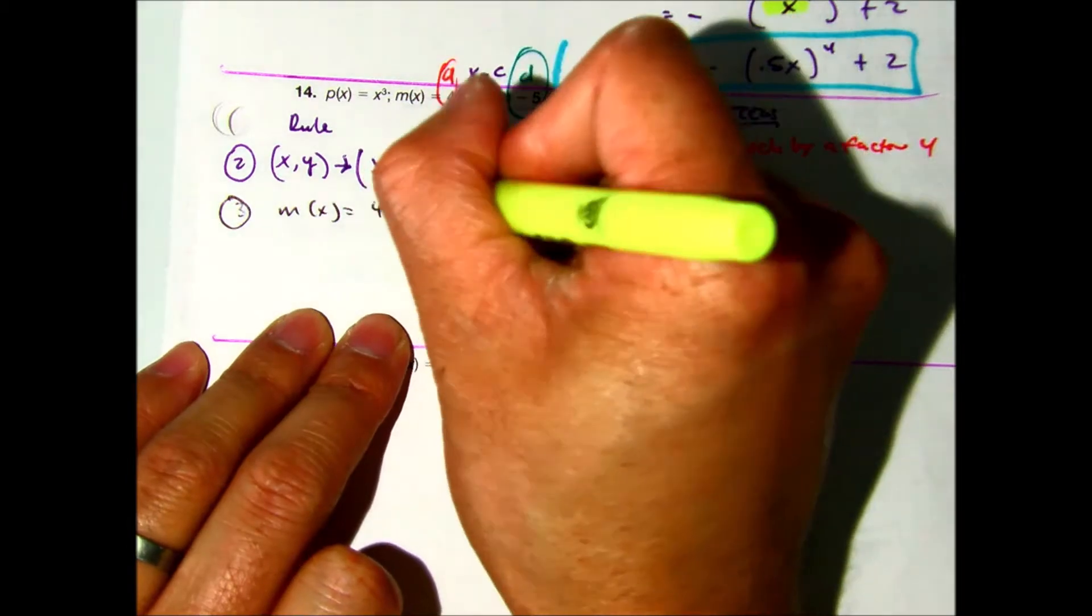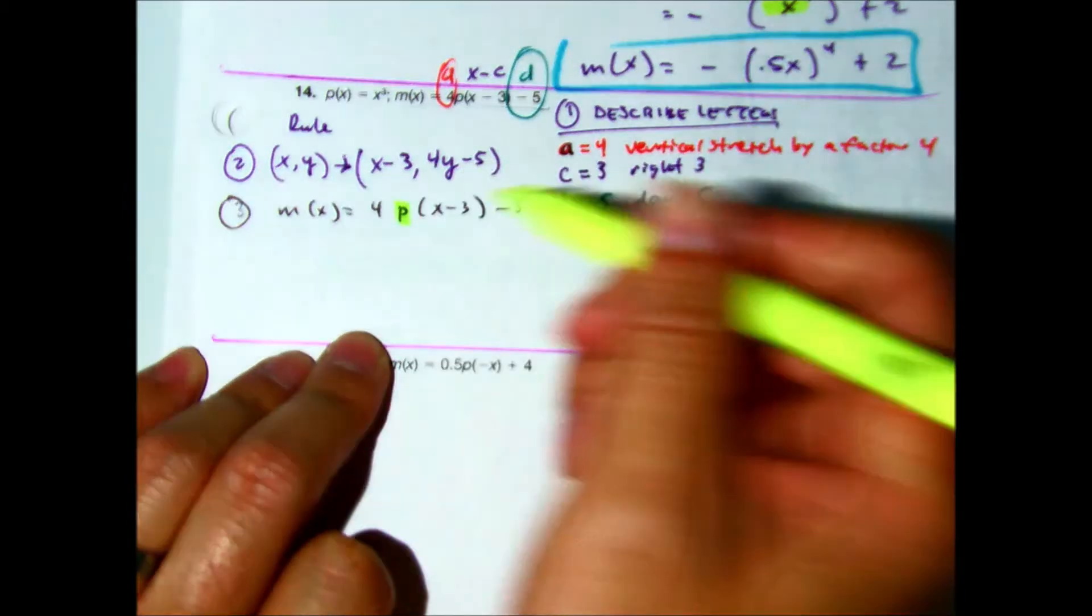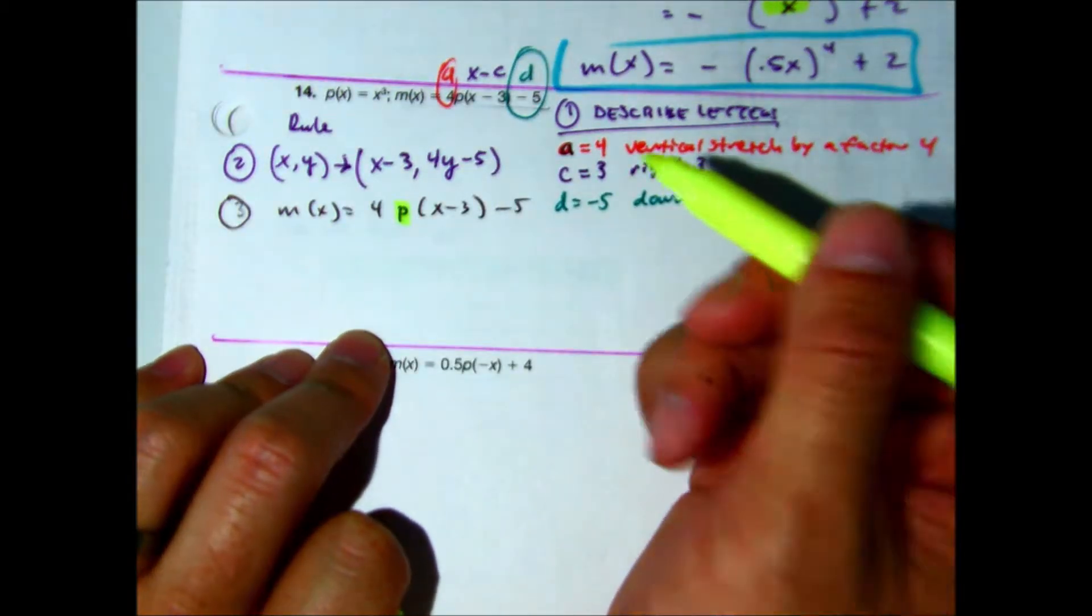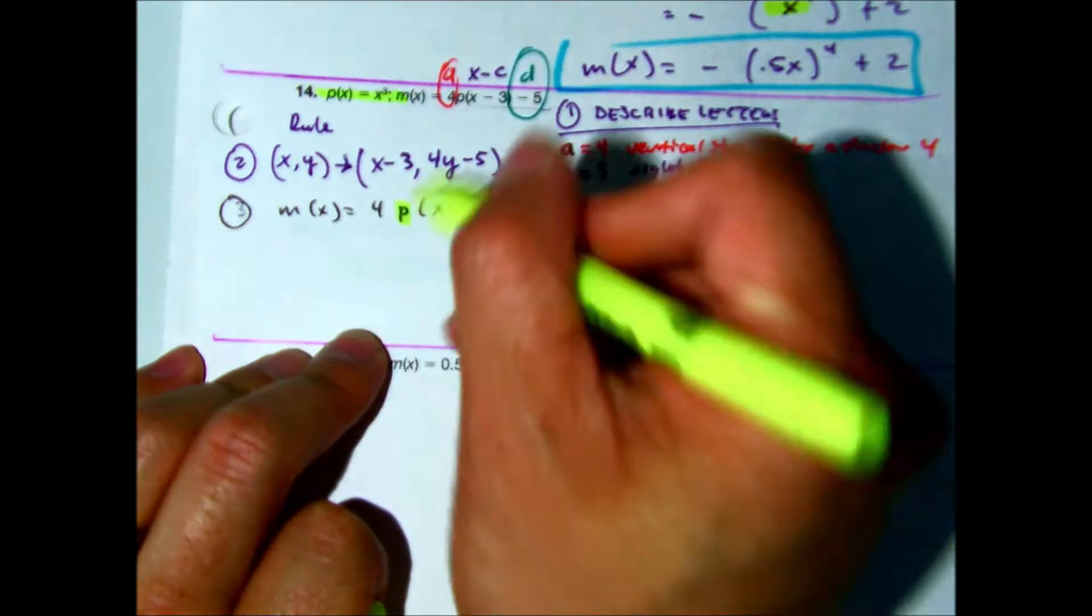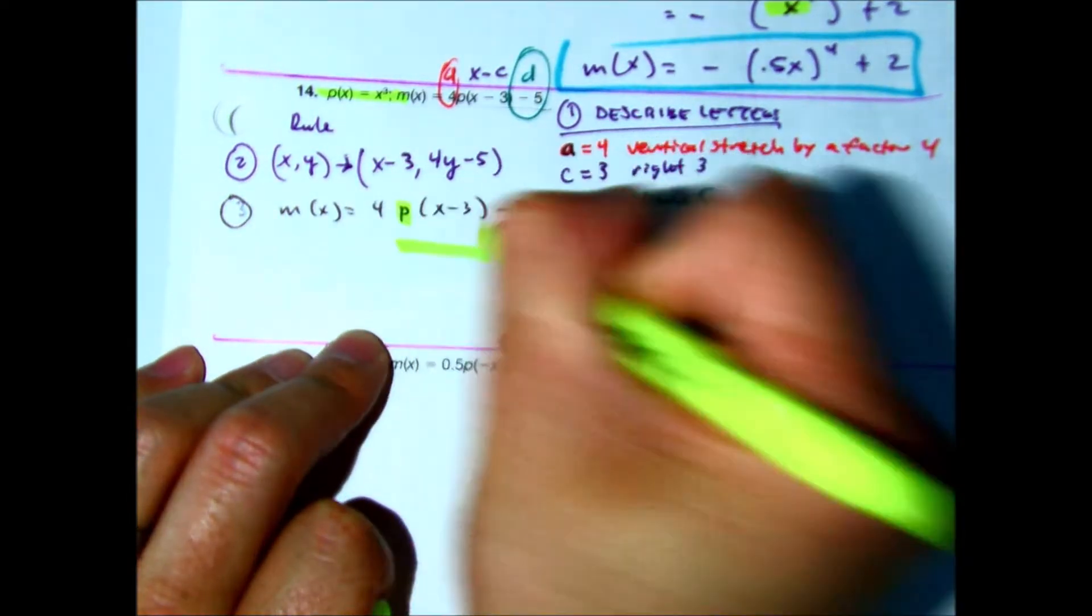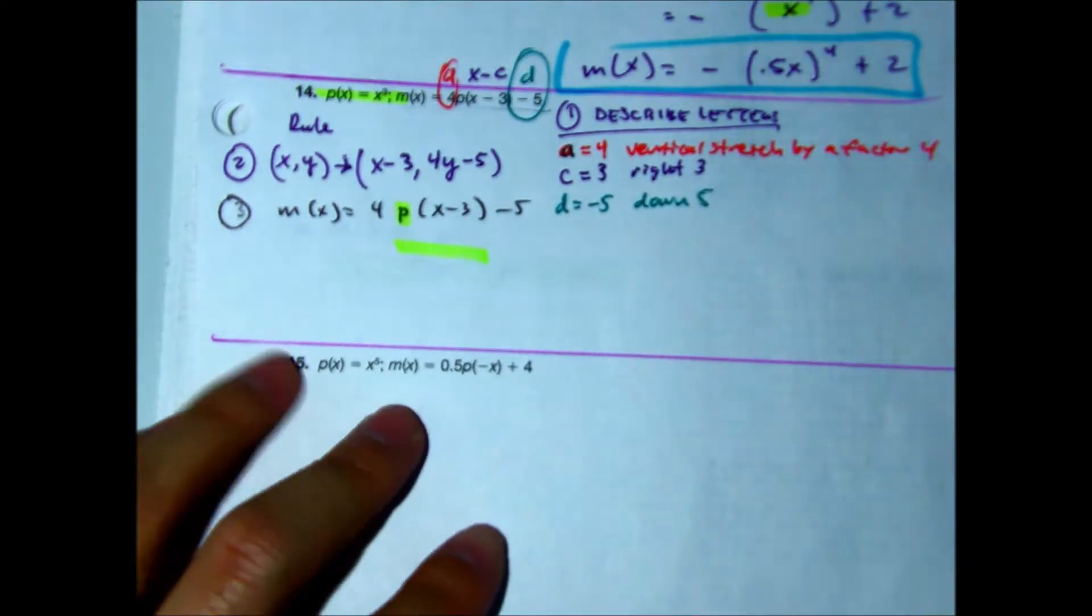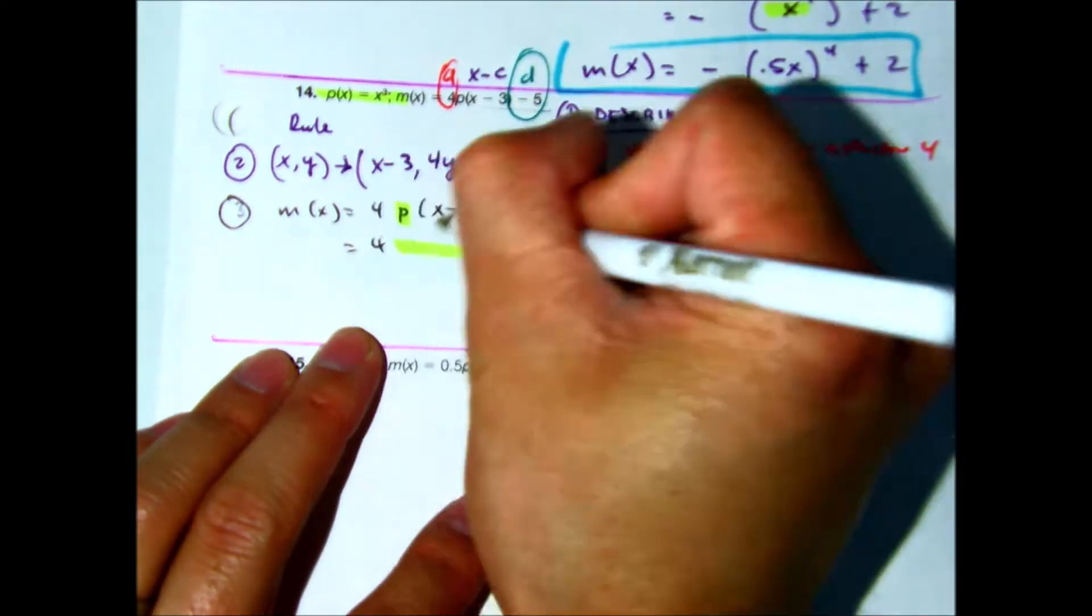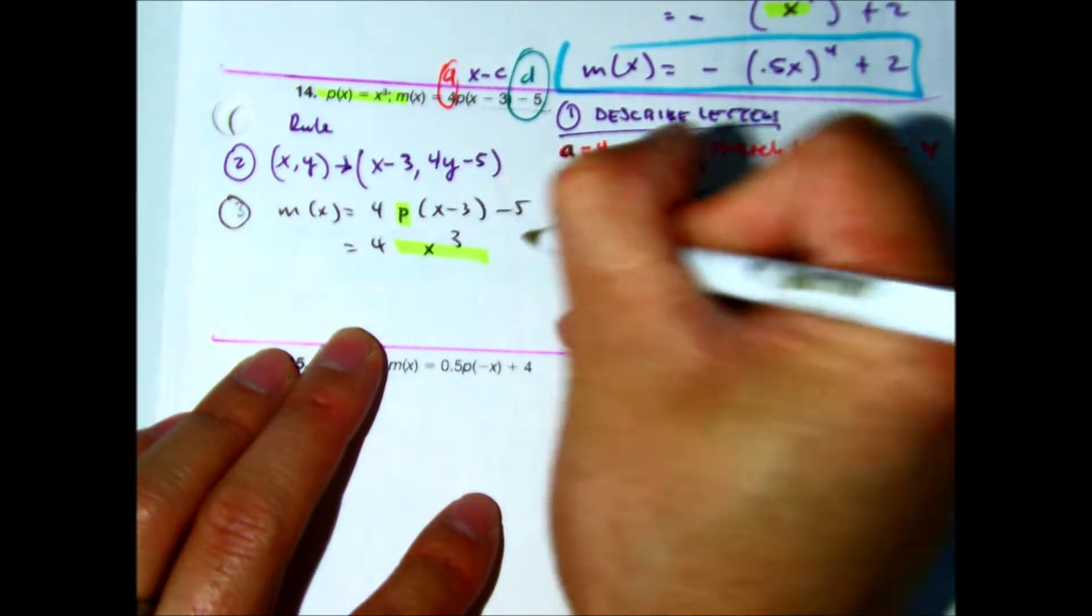Class, what's your P value? P of X is equal to X to the third, okay? So they're saying put four times X to the third minus five. Okay.